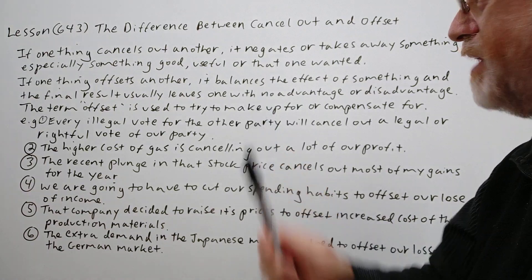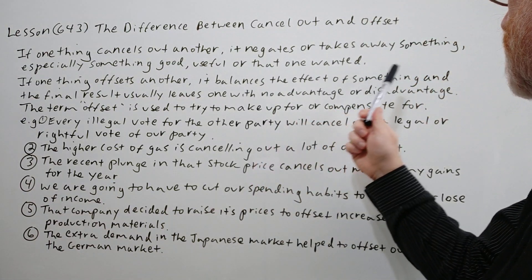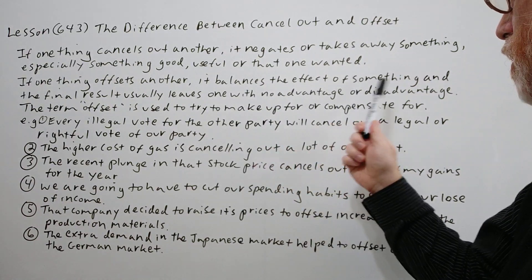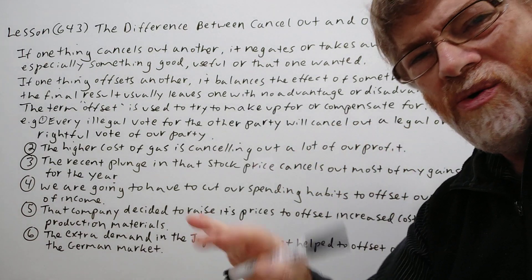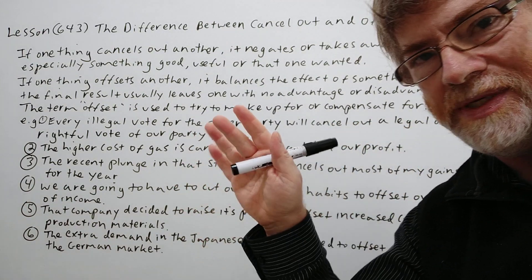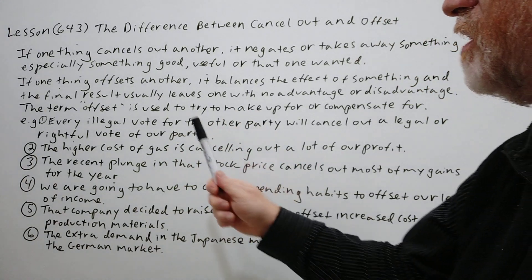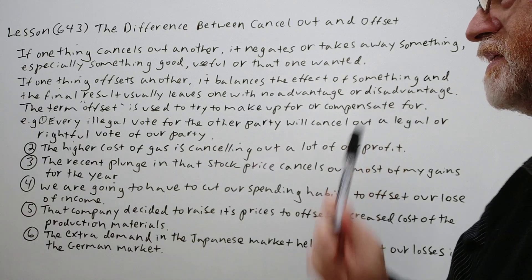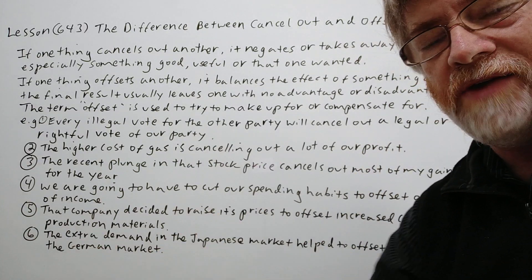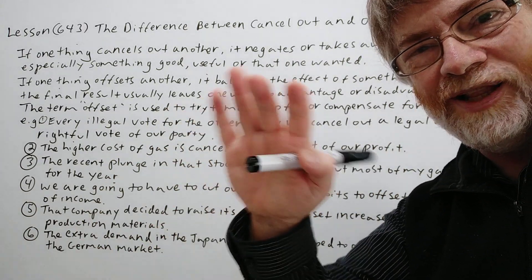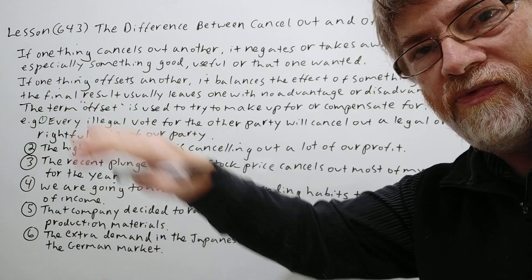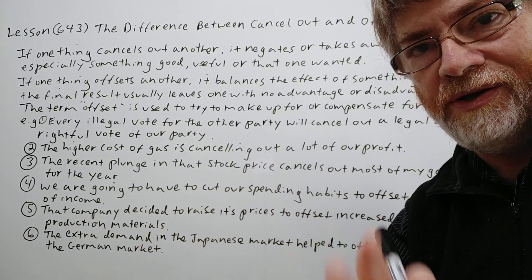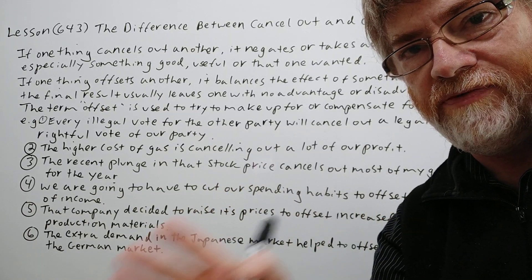If one thing offsets another, it balances the effects of something and the final result usually leaves one with no advantage or disadvantage, or close to it. The term 'offset' is used to mean to make up for or compensate for, so it tends to be more positive — you already got a loss and you're trying to make up for it. So actually they're kind of similar but looking at it from two different points of view.